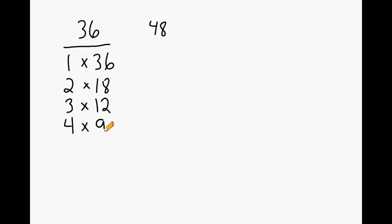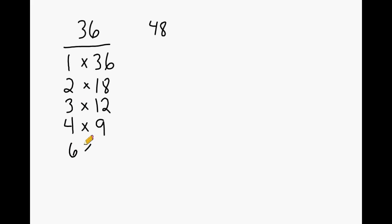Looking at 2 and 4: 4 is just double 2. Because we doubled the 2, we take the number across from 2, which is 18, and cut that in half. The number multiplied by 2 will always be double the number multiplied by 4. We see if 5 works, but it does not because the number has to end in a 0 or a 5. Then 6 will work if 3 works and the number you are multiplying by 3 is even. Because 3 is a factor and 12 is even, 6 works, and 6 times 6 is 36.